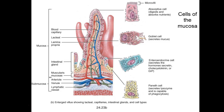You also have an enteroendocrine cell — 'entero' meaning GI tract, 'endocrine' meaning secreting chemicals. These cells secrete hormones such as cholecystokinin and gastric inhibitory peptide (GIP), which inhibits the movement of the stomach. Then there are cells that secrete lysozyme, which can neutralize and kill anything that's made it past the stomach that we don't want getting into the bloodstream. These are specialized cells found in each of the zillions of villi in your small intestines.